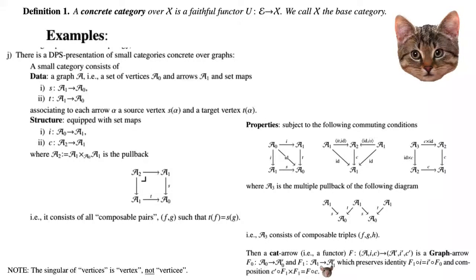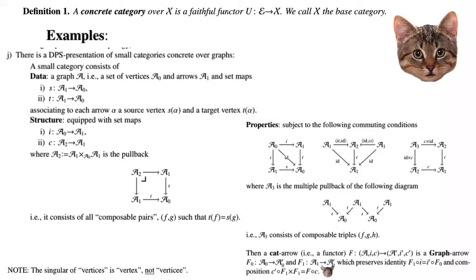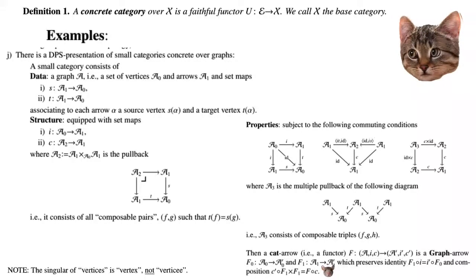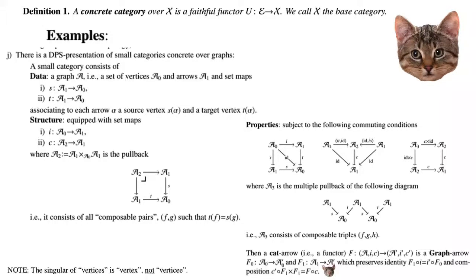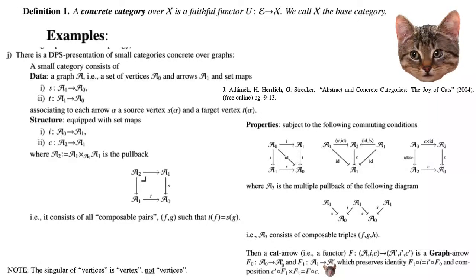For large categories, we need to assume the existence of inaccessible cardinals — those not constructible by unions of power sets starting from the empty set, i.e., von Neumann universe structures. This can be achieved using Zermelo-Fraenkel set theory with Choice plus Grothendieck universes, or alternatively using sets, classes, and conglomerates as in The Joy of Cats, whose first chapter discusses this.